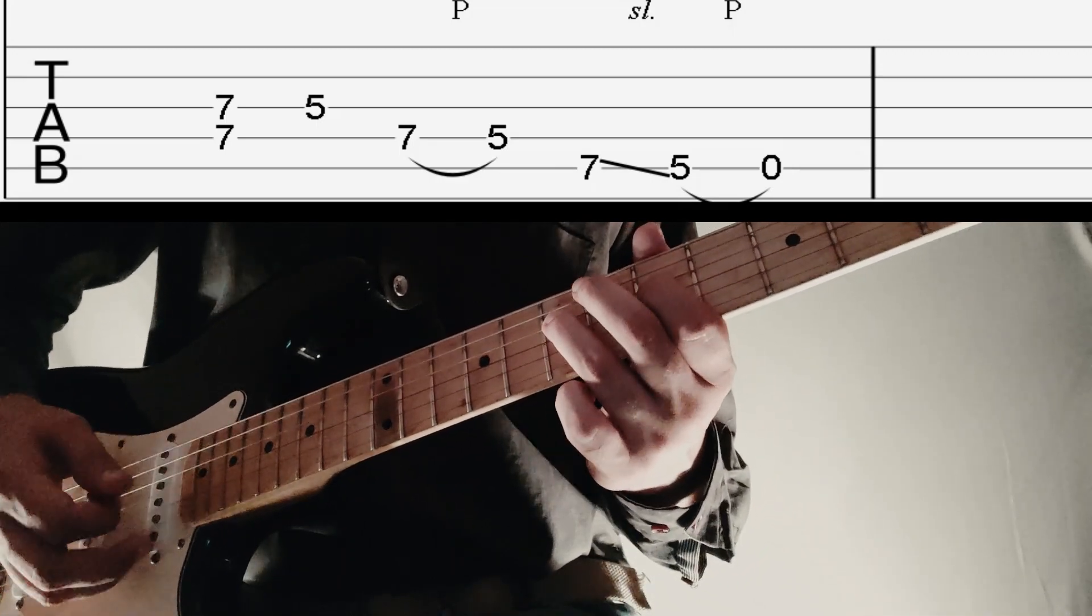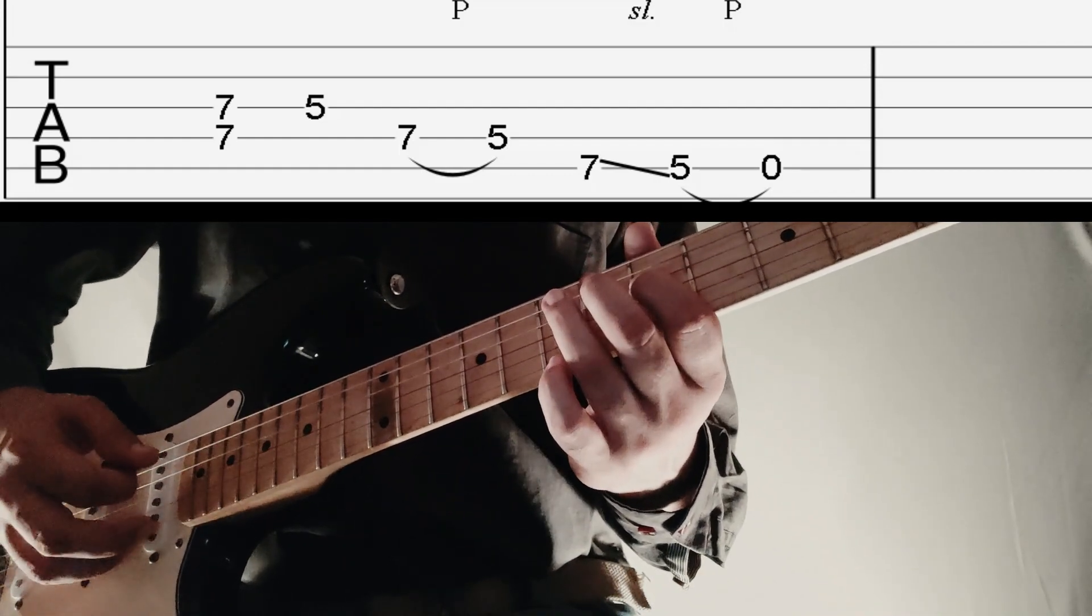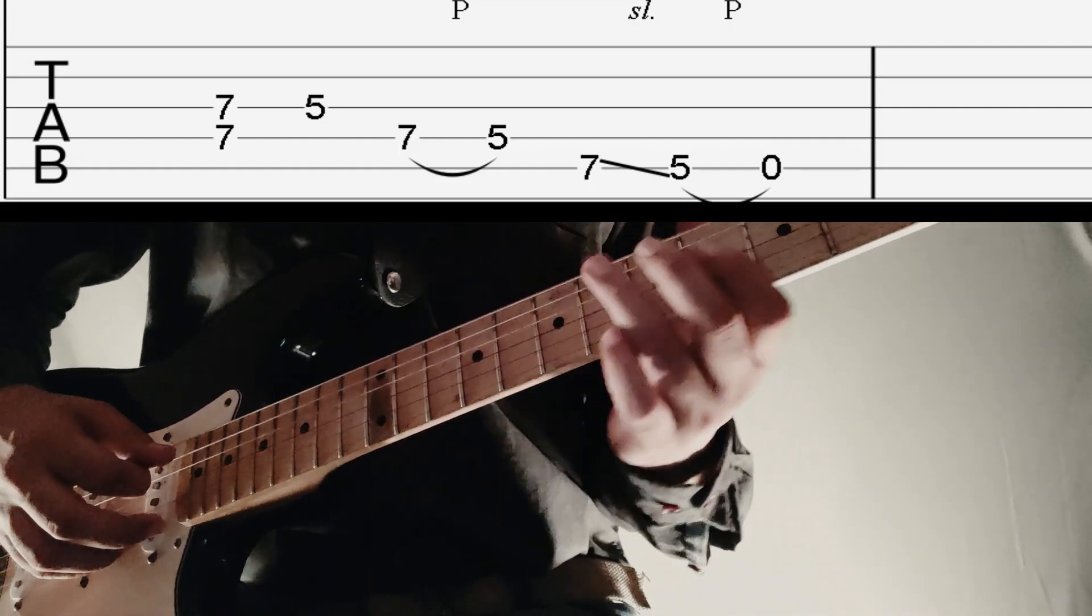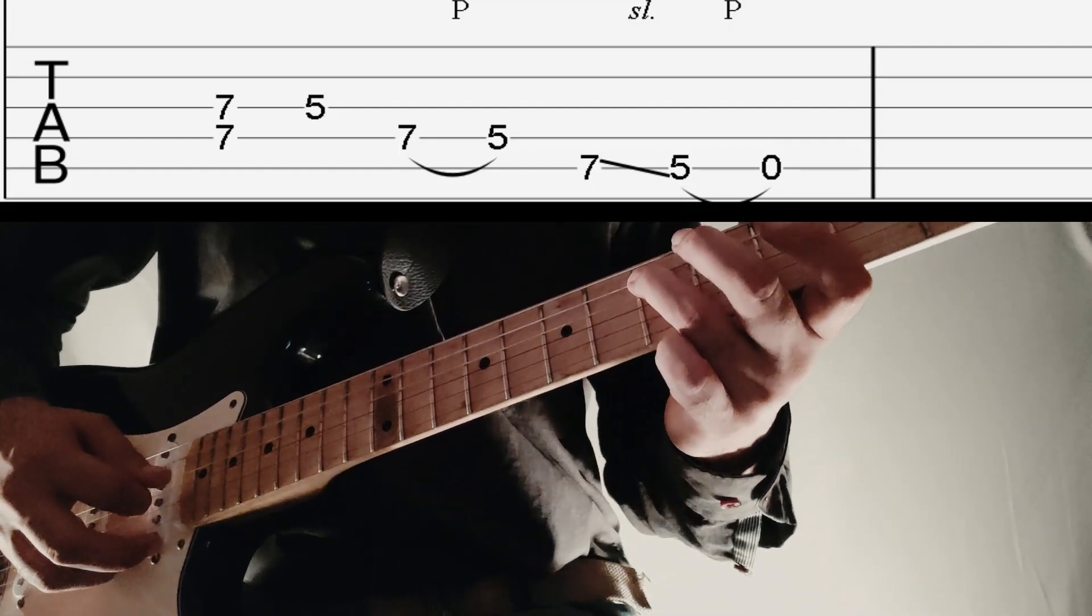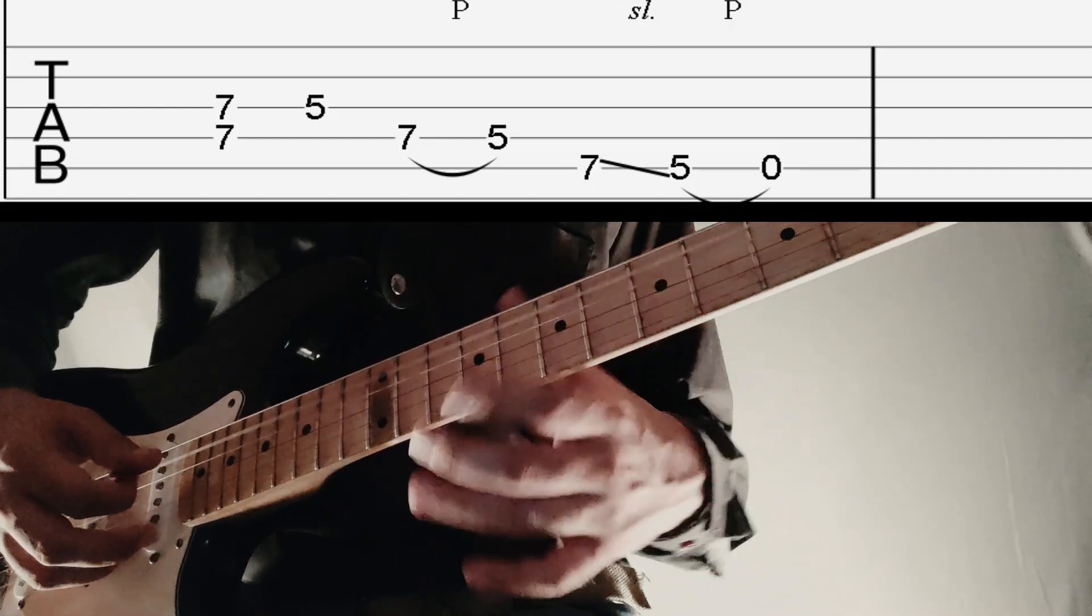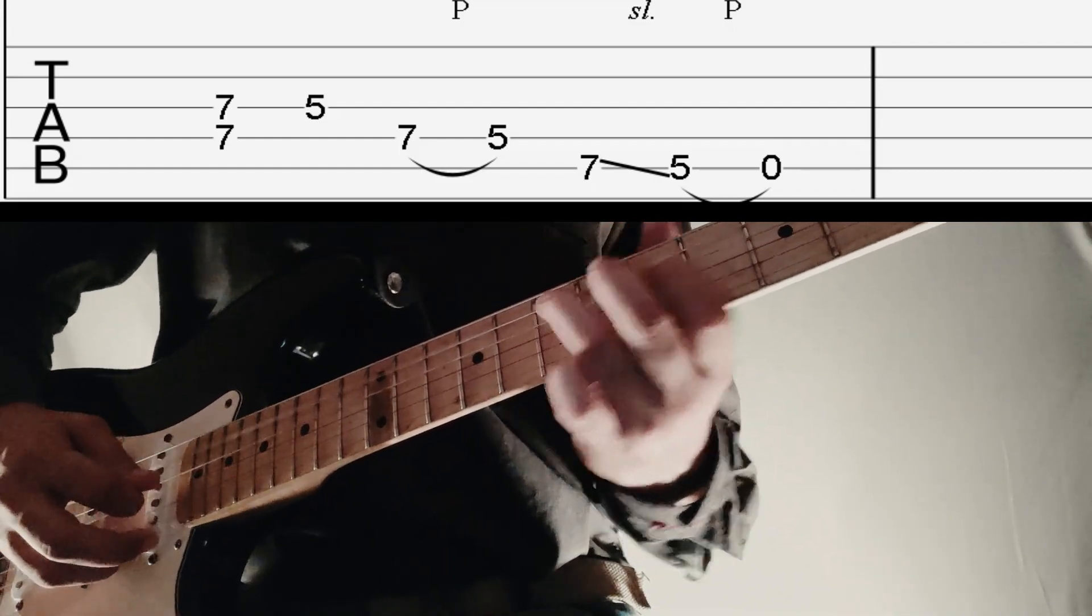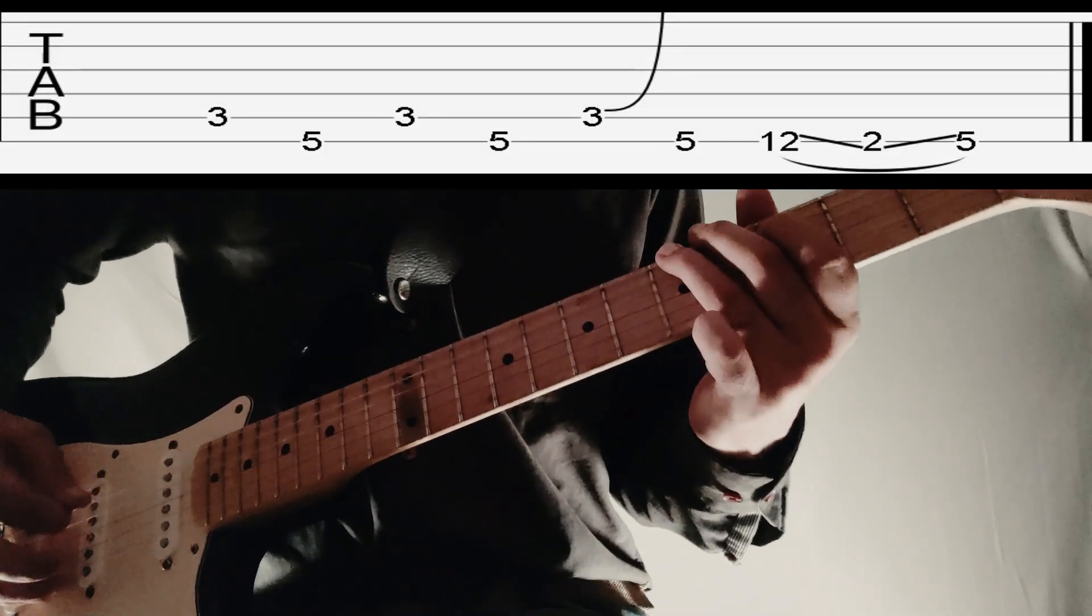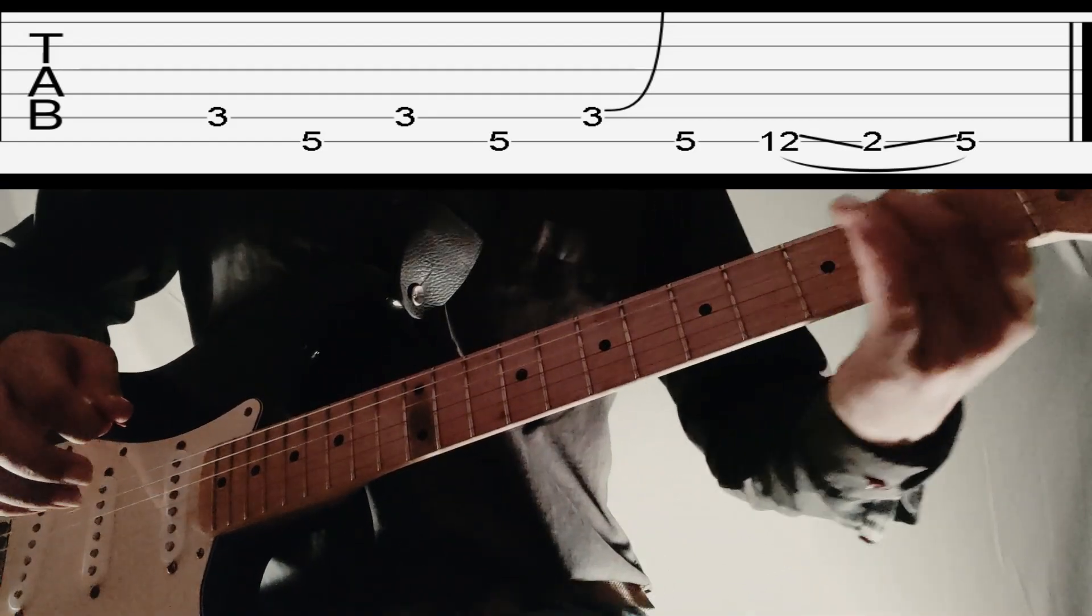Which is then followed by a pull off from 7 to 5 on 4th string. Then you have to slide from 7th fret A string to 5th fret on 5th string. Then a pull off from 5 to 0.